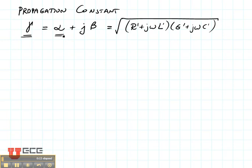A real part, alpha, which is the attenuation constant, and an imaginary part, beta, which is the real part of the propagation constant.